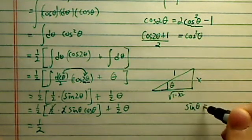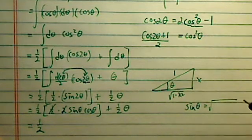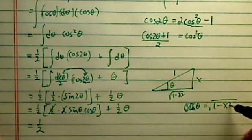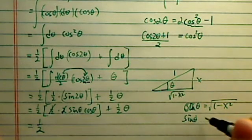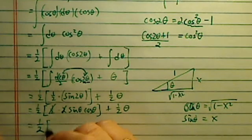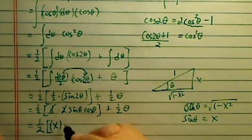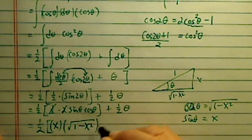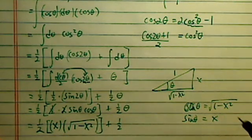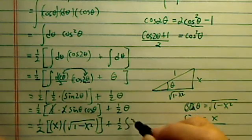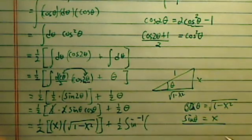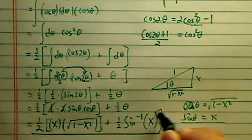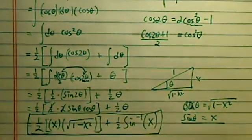So sine of theta is equal to radical. This is cosine. Cosine of theta is 1 minus x squared. Sine theta is equal to x. So let's put it back in there. Sine theta is x. Cosine theta is 1 minus x squared. Plus half of theta, which is theta. Sine arc sine of x. Alright. So this is our final answer. Thus proves the original formula.